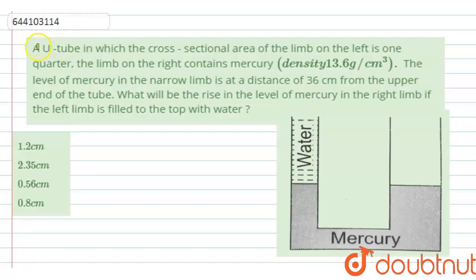The given question is: A U-tube in which the cross-sectional area of the limb on the left is one quarter. The limb on the right contains mercury.